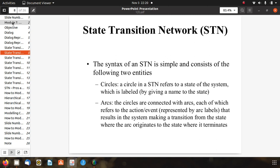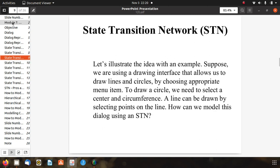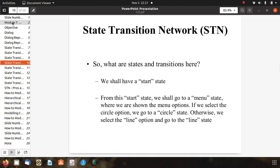Let's illustrate an example. Suppose we are using a drawing interface that allows us to draw lines and circles by choosing appropriate menu items. To draw a circle we need to select a center and circumference. A line can be drawn by selecting points on the line. We have to know the process. How can we model this dialogue using an STN?